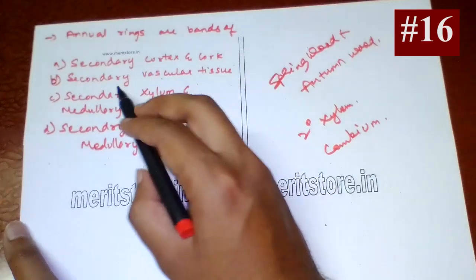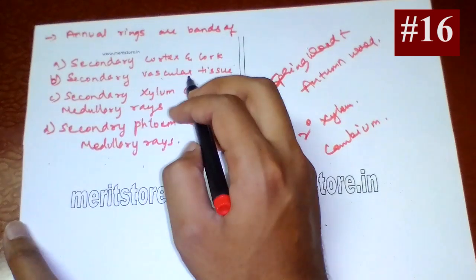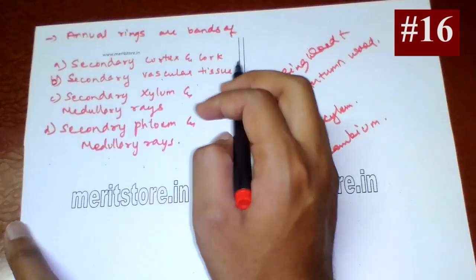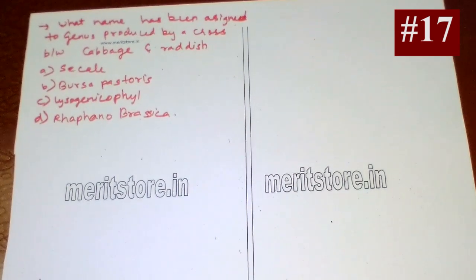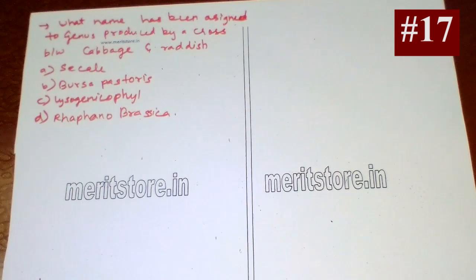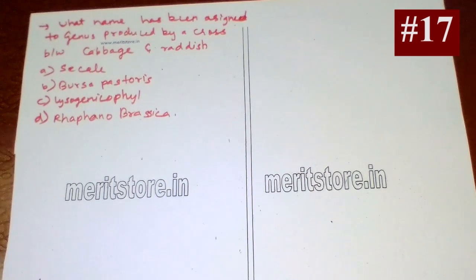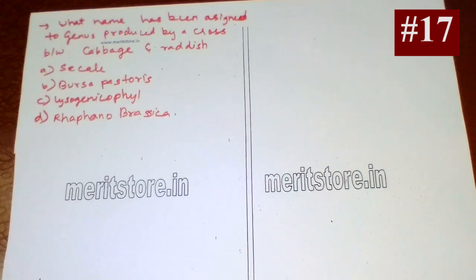What name has been assigned to the genus produced by a cross between cabbage and radish? The options are: A. Cical, B. Brusa, C. Lysogeicophile, D. Raphanobrassica.